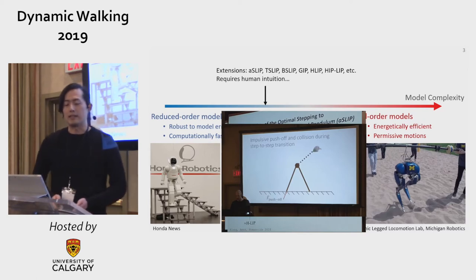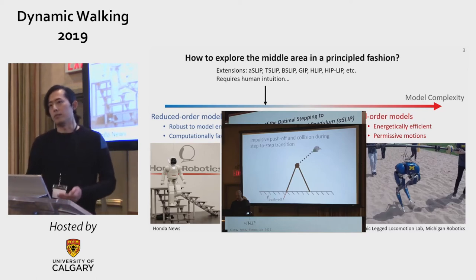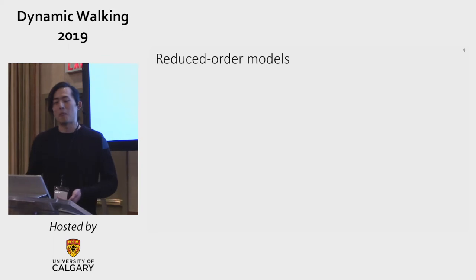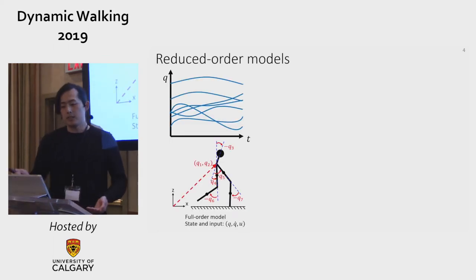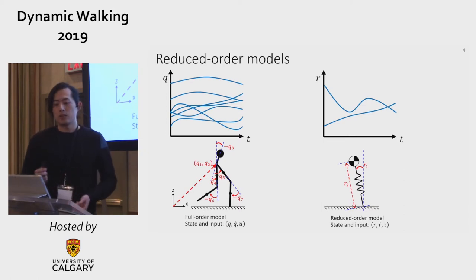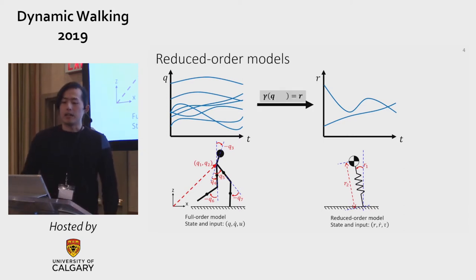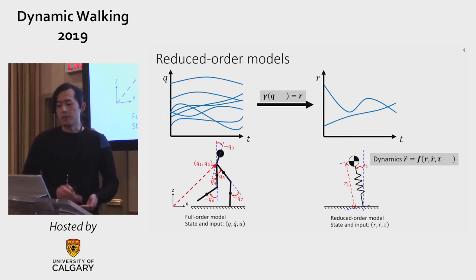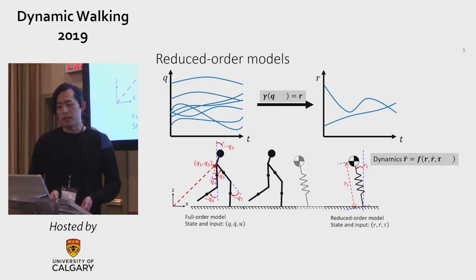So one big question I would like to ask is: can we explore the middle area? What is the reduced order model? We start with the full order model such as a 5-link planar robot, and we want to find a reduced order model such as SLIP. We define the reduced order model by two things: one is a function called gamma, which maps the full order model configuration to the reduced order model configuration, and the second is the dynamics of the reduced order model, which includes the state and input of the model.